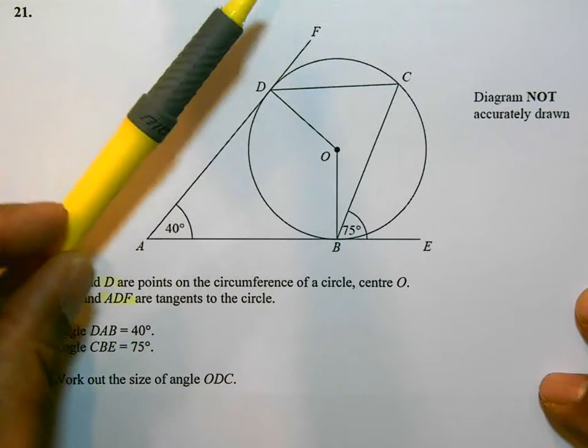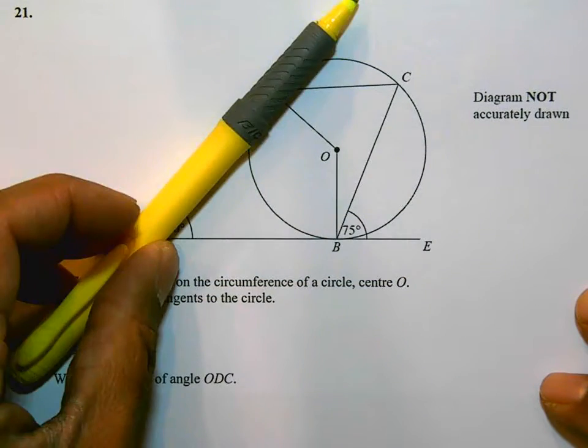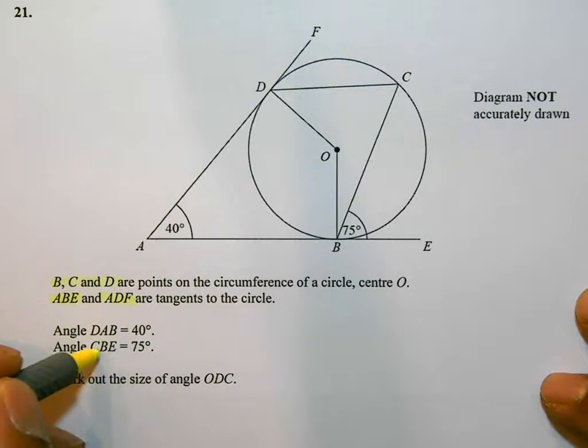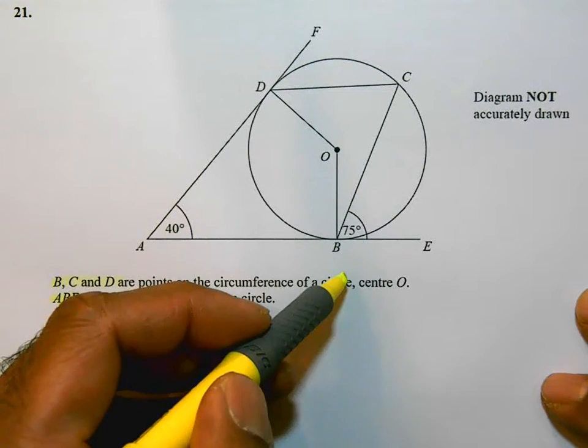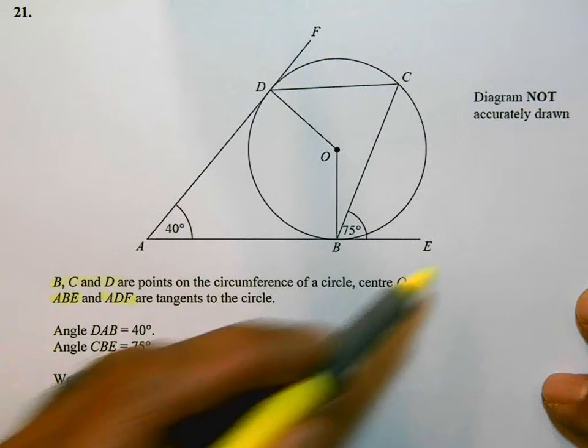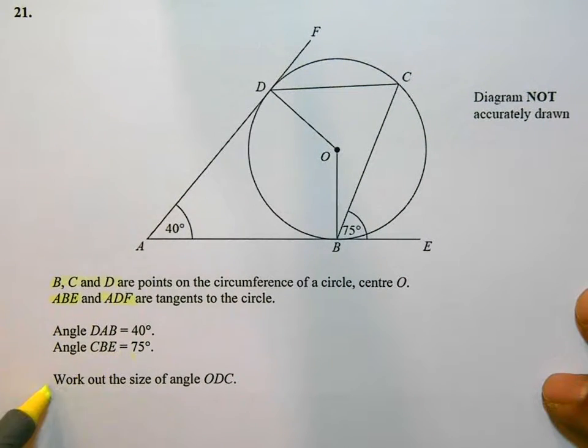So ABE and ADF are tangents. They've given us these angles, DAB this one here and CBE. CBE they're 75. Work out the size of ODC.